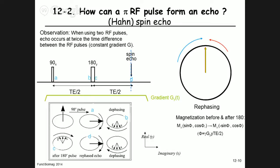In this case with a constant gradient G_y, the static field inhomogeneity is refocused by the 90-degree and 180-degree pulse combination, producing an echo at time TE with maximum signal. This makes it possible to generate an image even in the presence of T2 star imperfections of the main magnetic field.